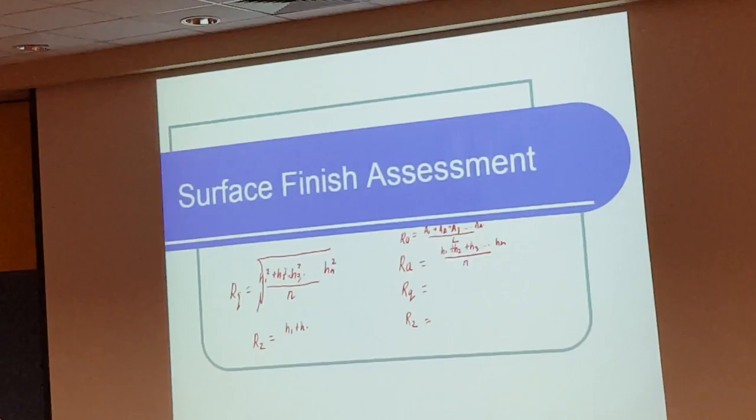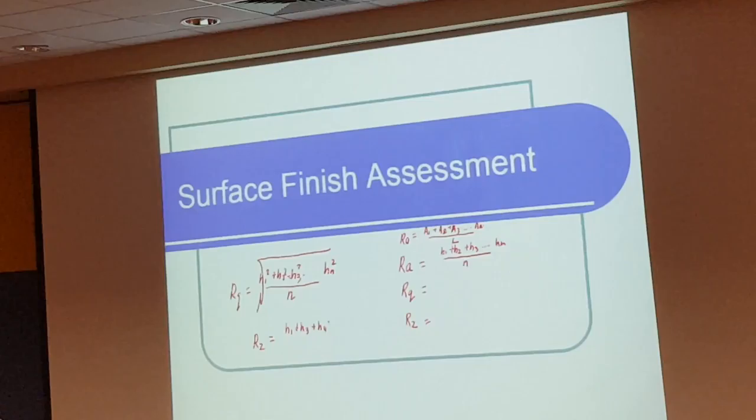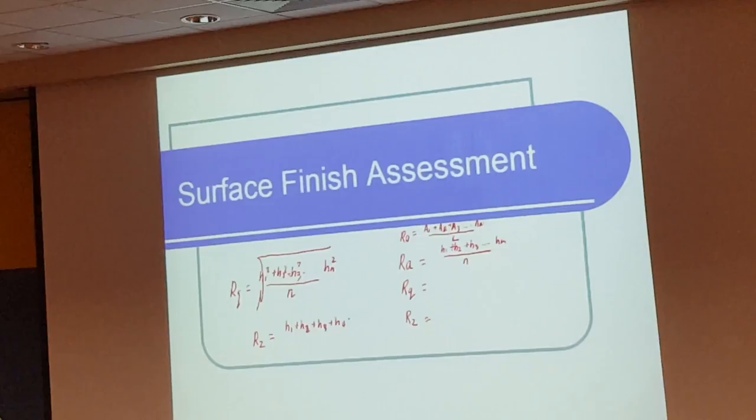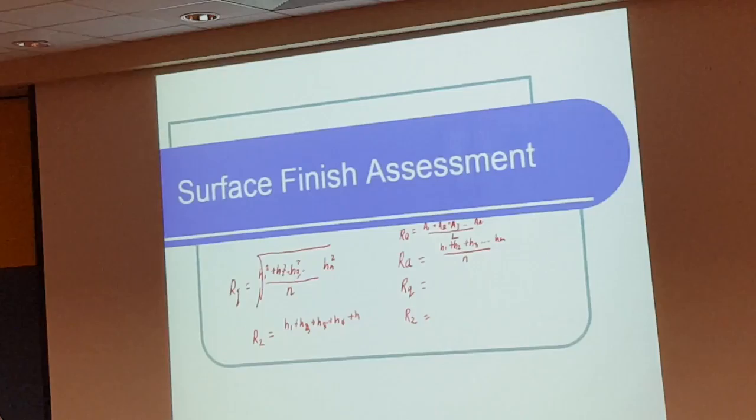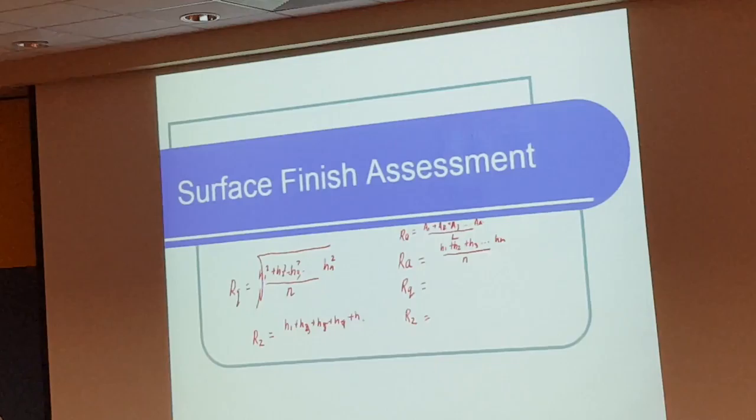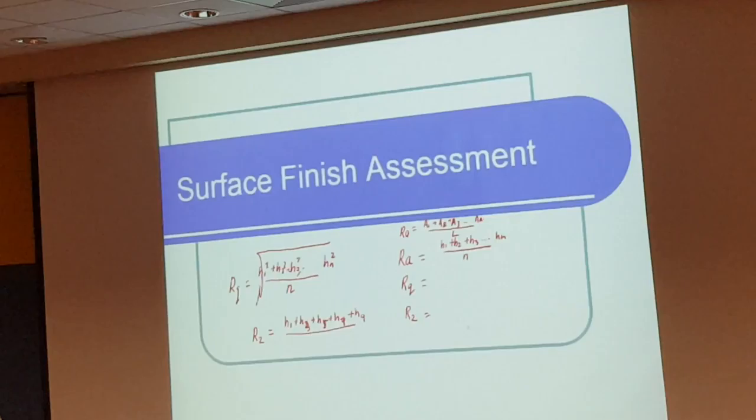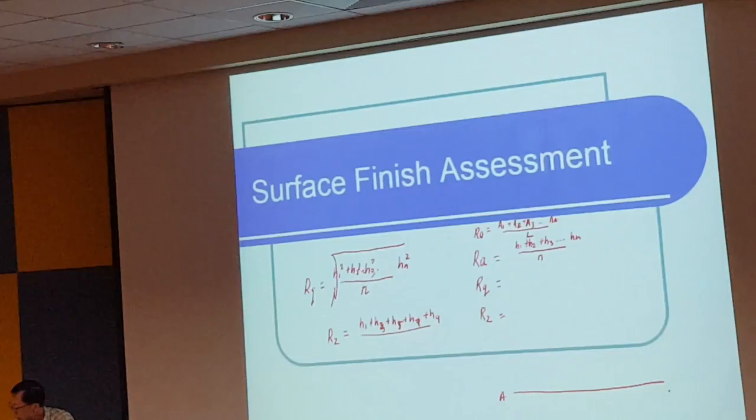And the Rz is the peak to valley height. Many standards exist. It is actually equals to all the peak value, peak to valley height. The only peak is odd number, at least five, three - five peak to valley height, ten points, that's why it's called ten point.